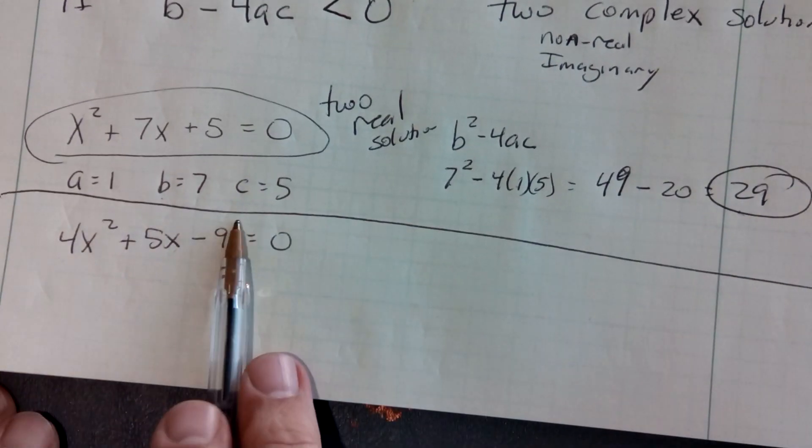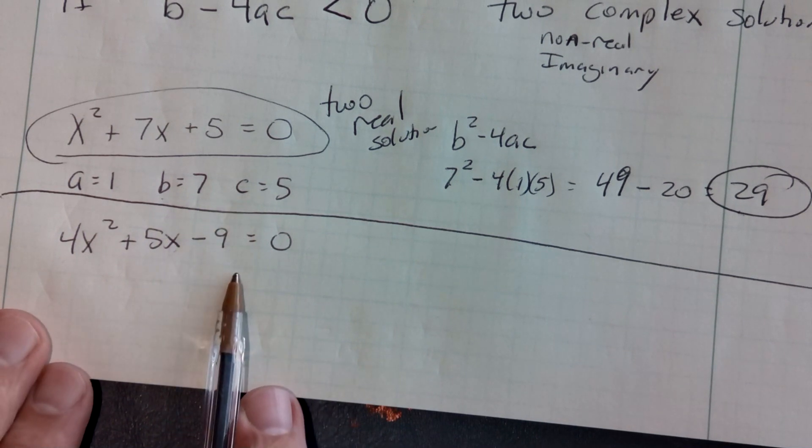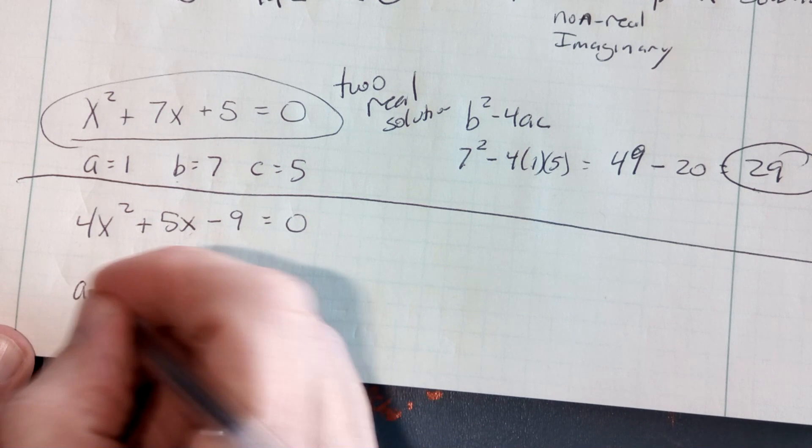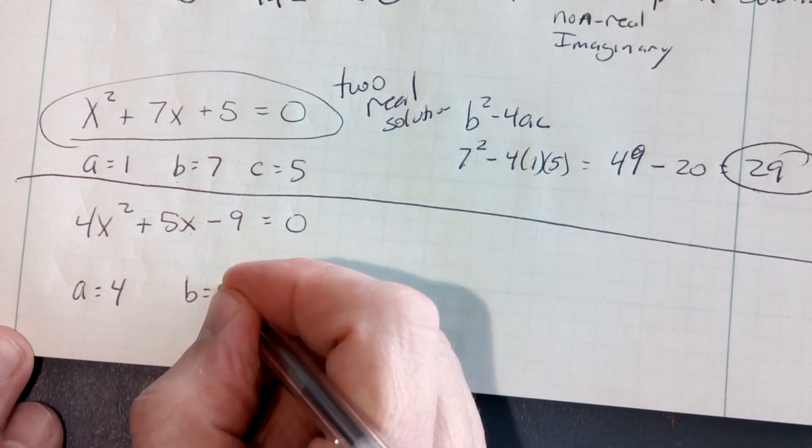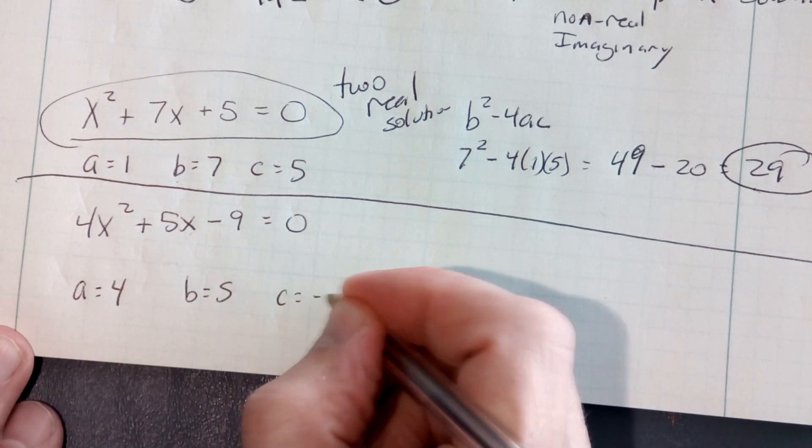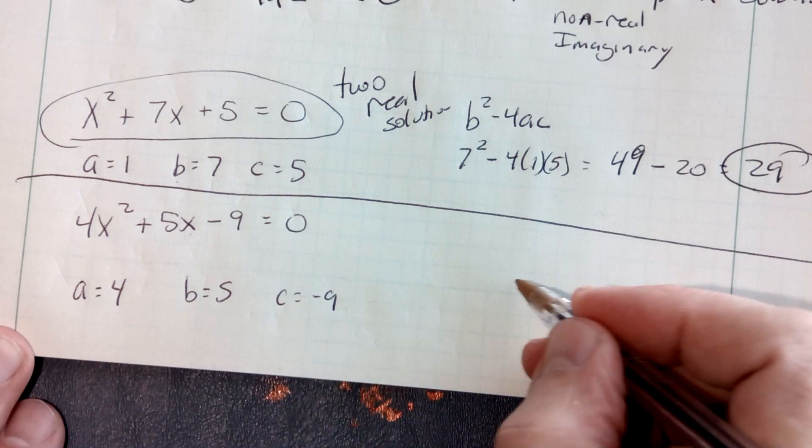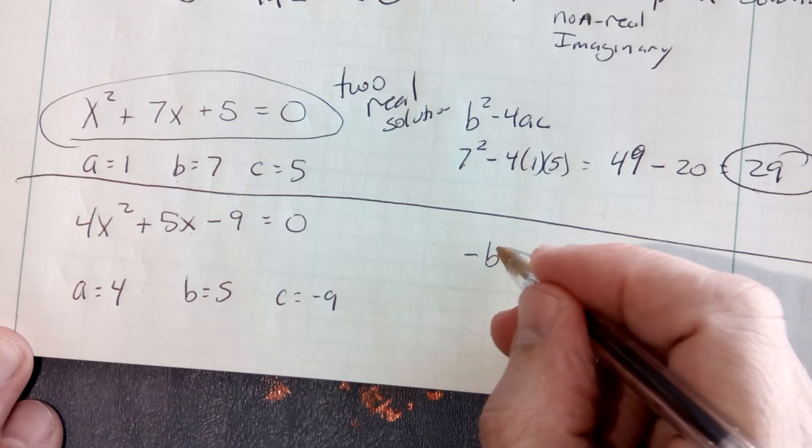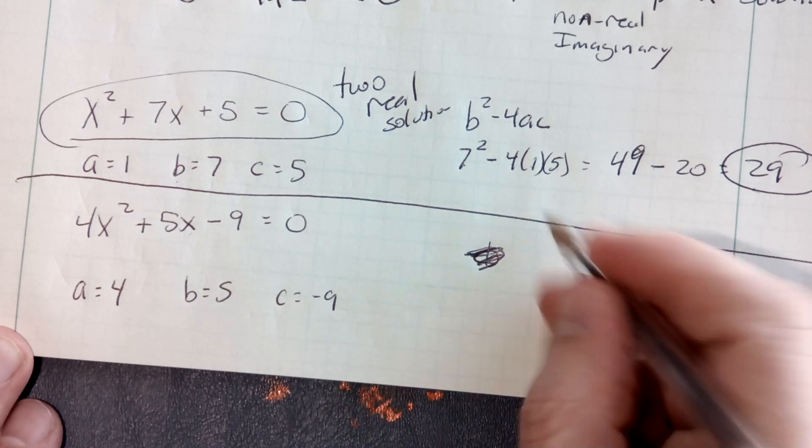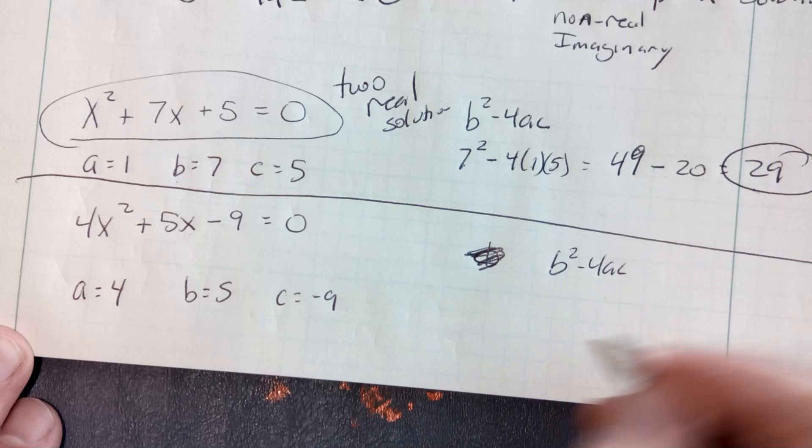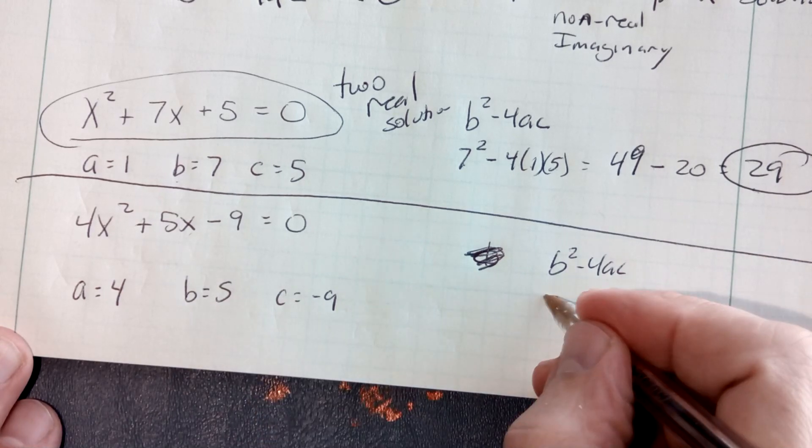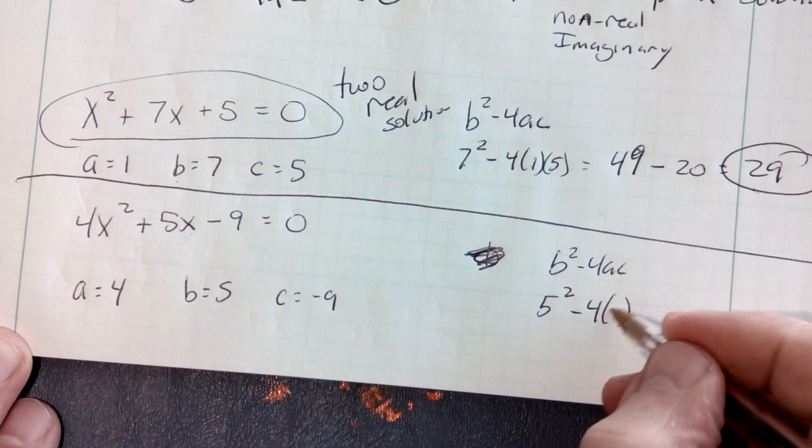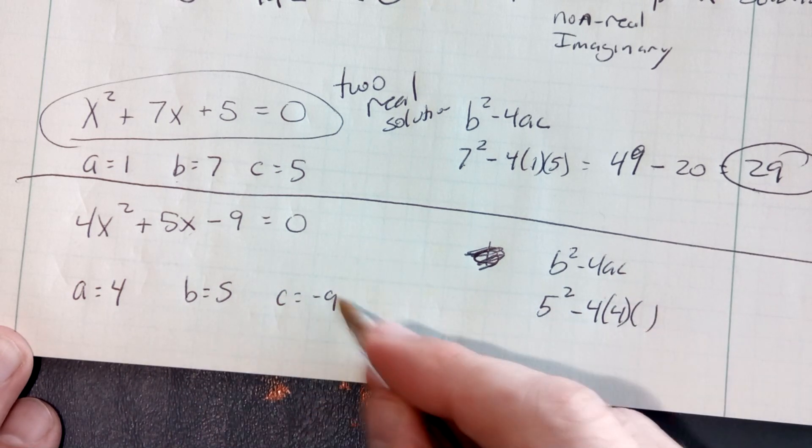Let's do this 4x-squared plus 5x minus 9 and see what happens. First thing I'm going to do is label my a. My a is 4, my b is 5, and my c is negative 9. So what I'm going to do is the b-squared minus 4ac. b is 5, so I'm going to do 5-squared minus 4 times a. a is 4, times c, which is negative 9.